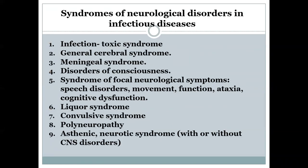What are the main syndromes in neurological disorders we may find when talking about infective disease? Usually patients show symptoms of infection-toxic syndrome, general cerebral syndrome, meningeal syndrome, disorders of consciousness, and focal neurological symptoms such as speech disorders, movement disorders, functional disorders, ataxia, or cognitive dysfunction. Other syndromes include liquor syndrome, convulsive syndrome, polyneuropathy, and asthenic neurotic syndrome with or without central nervous system disorders.